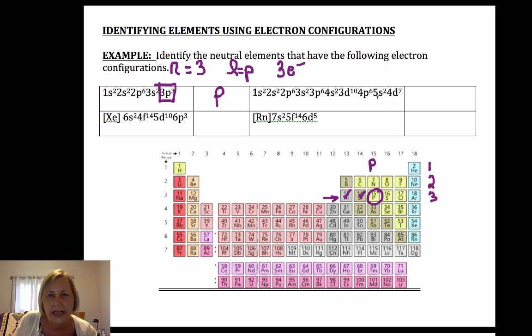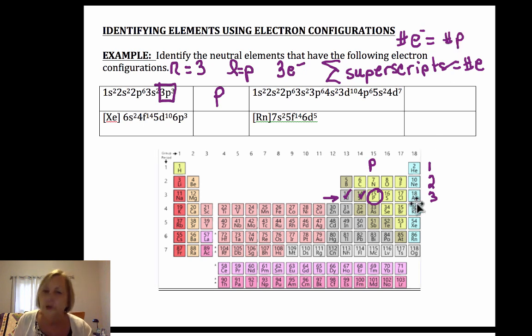Okay let's try another one. Again you can always add up all of the superscripts. I'm not going to do it with these, but you can add up all the superscripts and that tells you the number of electrons. If it's neutral my number of electrons is equal to my number of protons. So you could find the atomic number.